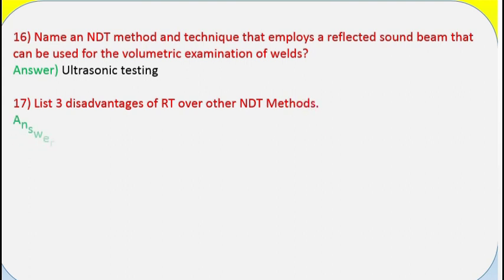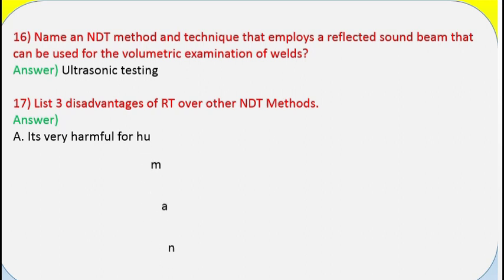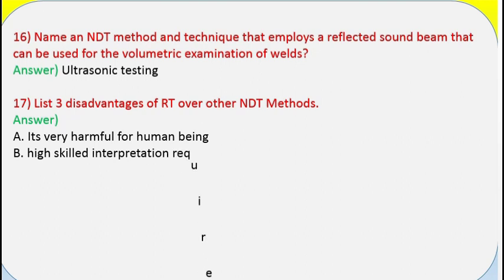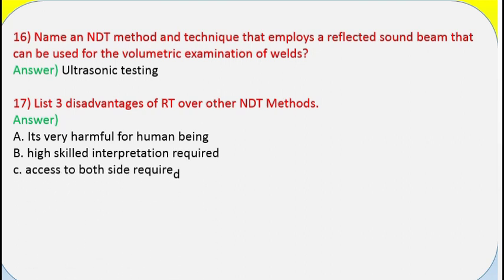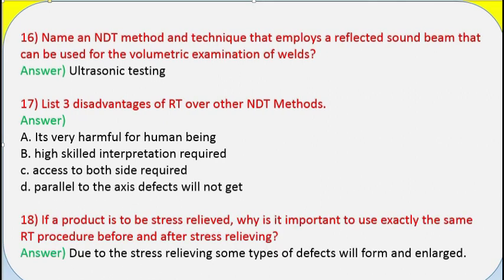Question 17: List three disadvantages of RT over other NDT methods. Answer: (a) It is very harmful for human beings. (b) High-skilled interpretation required. (c) Access to both sides required. (d) Defects parallel to the axis will not be detected. Question 18: If a product is to be stress-relieved, why is it important to use exactly the same RT procedure before and after stress-relieving? Answer: Because due to stress-relieving, some types of defects will form and enlarge.